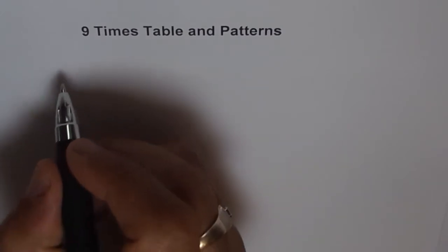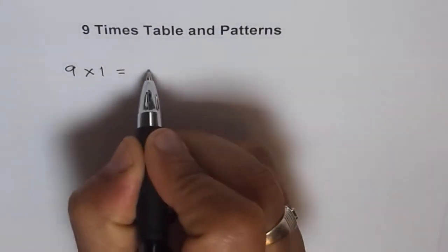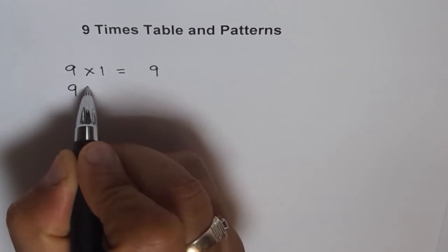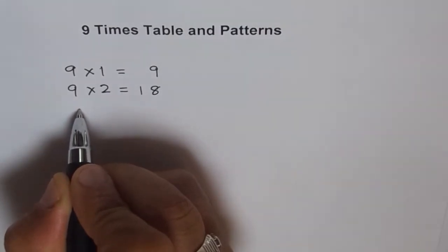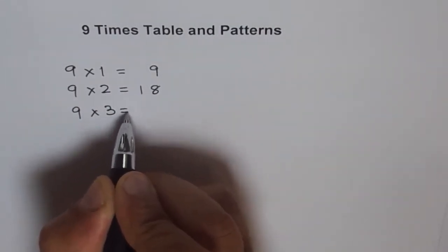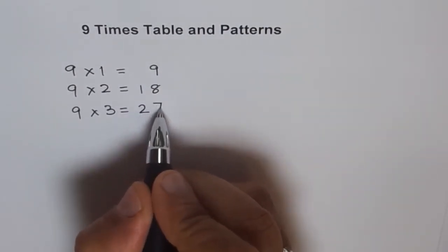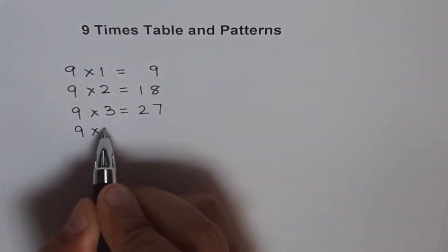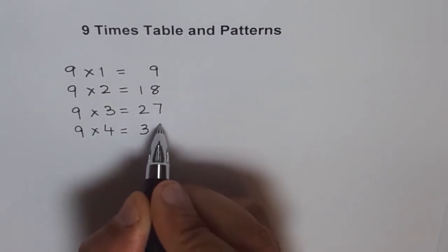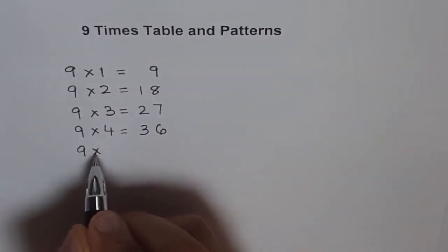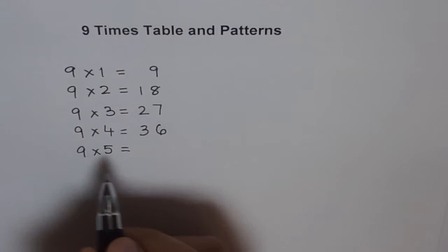Do you know what is 9 times 1? Let's write it down here. 9 times 1 equals 9. How about 9 times 2? 9 times 2 is 18. And 9 times 3 — you can add 9 to 18 and get 27. How about 9 times 4? 9 times 4 is 27 plus 9, which is 36. 9 times 5 is the same as 5 times 9, which is 45.